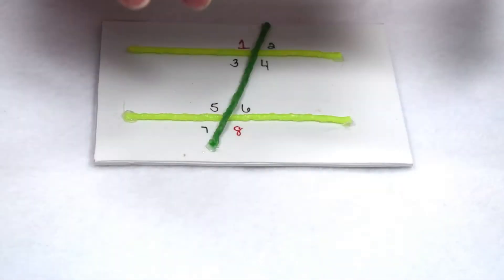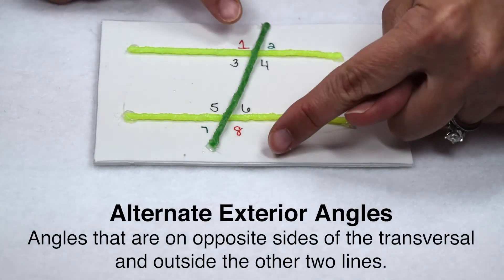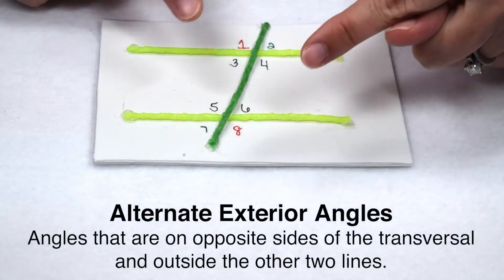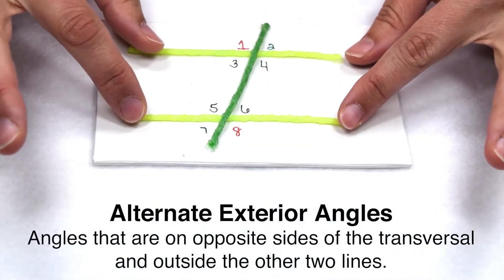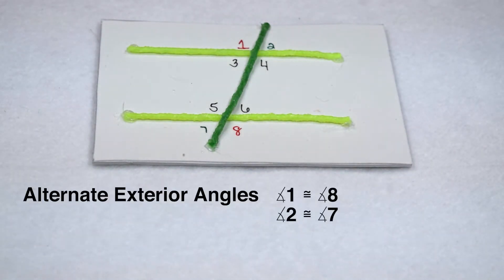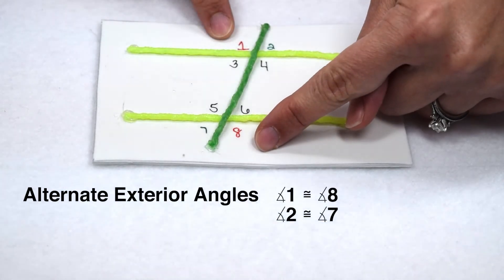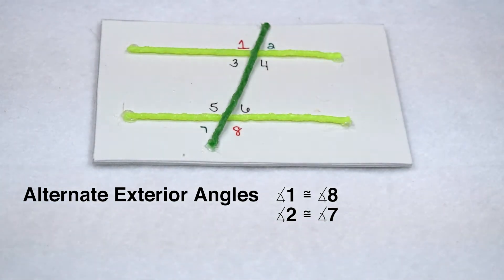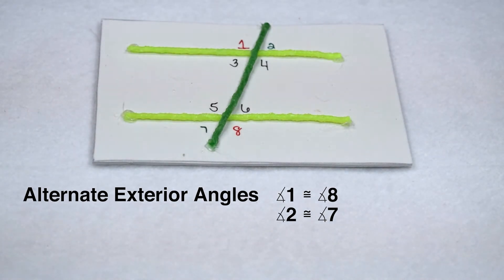In addition to those, we also have alternate exterior angles. Alternate exterior angles would still fall on opposite sides of the transversal, but now they're going to fall outside our parallel lines. So angle 1 and angle 8 would be one set of alternate exterior angles, and angle 2 and angle 7 would be our other set of alternate exterior angles.